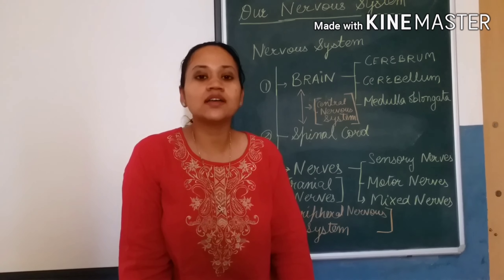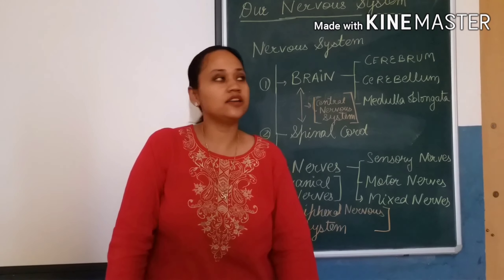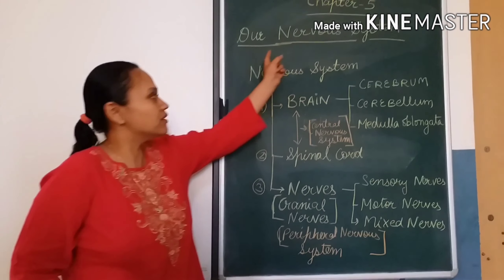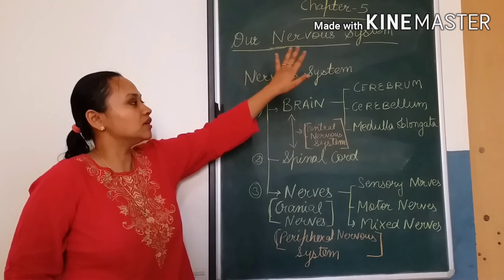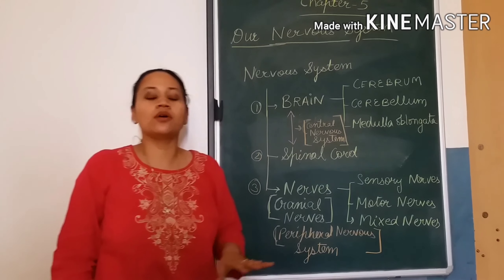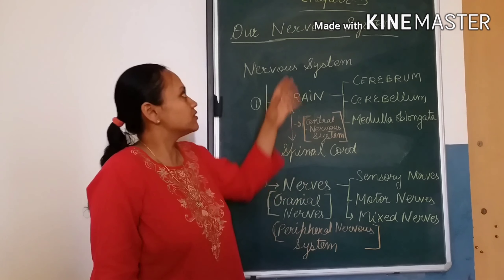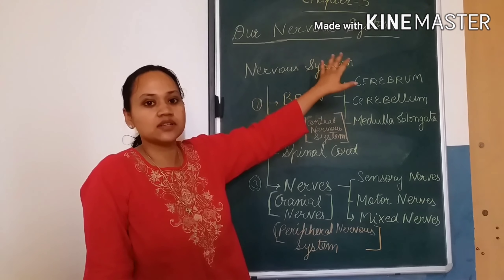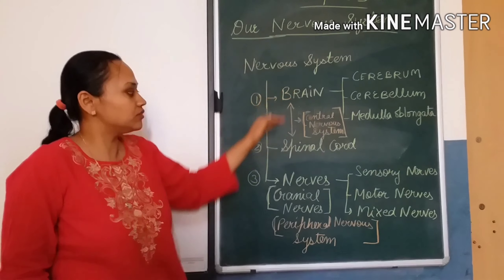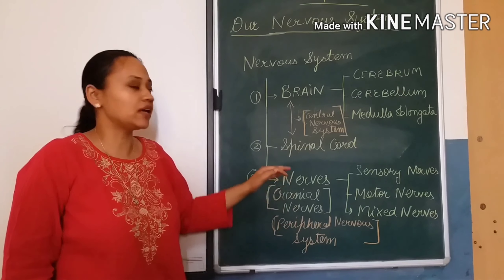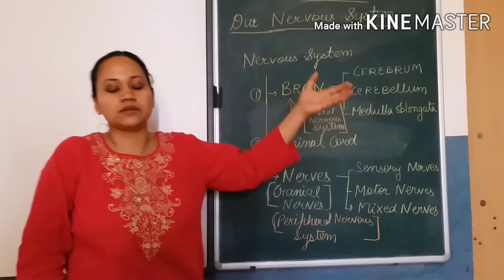Hello students, today we are starting a new chapter — chapter 5, our nervous system. In this chapter, we will learn about the different things which are present in the nervous system. But we start firstly with the three parts that form the complete nervous system.